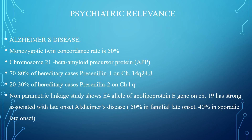We will now discuss psychiatric relevance in comparison to genetics. First, Alzheimer's disease: monozygotic twins' concordance rate is up to 50%. Chromosome 21 beta-amyloid precursor protein is involved. Pre-senile 1 on chromosome 14Q24.3 accounts for 70-80% of hereditary cases and is mostly seen with onset at 40 years of age, while Pre-senile 2 on chromosome 1Q accounts for 20-30% of hereditary cases and was seen after onset of illness after 50 years of age. Non-parametric linkage study shows the E4 allele of apolipoprotein E gene on chromosome 19 has strong association with late-onset Alzheimer's disease: 50% in familial late-onset and 40% in sporadic late-onset.